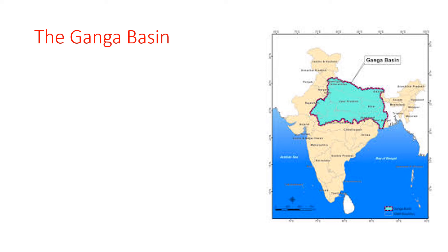The Himalayan rivers which join the Ganga after Allahabad from west to east are the Gomti, the Gandak, and the Koshi. The flow of rivers slows down due to the load of sediments carried, and before entering the sea it deposits sediments at its mouth, branching into distributaries to form a delta. The Ganga and the Brahmaputra join together in Bangladesh and make the largest delta in the world — the Sundarbans Delta.